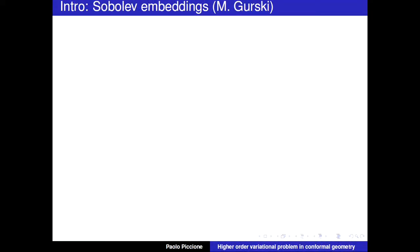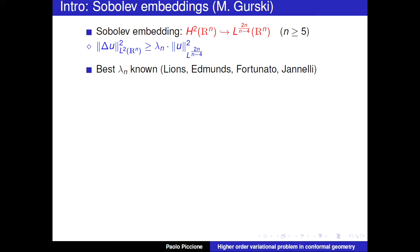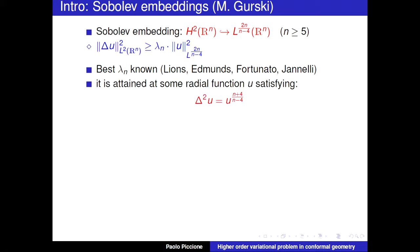Let me tell you a little bit about this problem — I'm getting inspiration from a nice introduction by Gursky. We have Sobolev embeddings: H^2 of R^n is embedded into L^(2n/(n-4)) for n greater than or equal to 5, and this embedding is only continuous, hence non-compact. In particular, the L^2 norm of the Laplacian is greater than or equal to some constant times the L^(2n/(n-4)) norm of u. The best constant for this inequality is known, studied in the 1980s by Lions, Edmunds, Fortunato, and Iannelli.